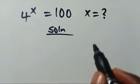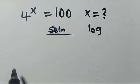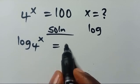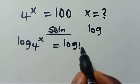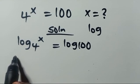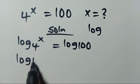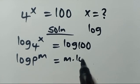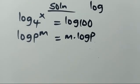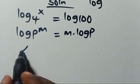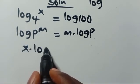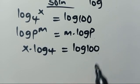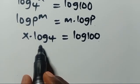From here, let's introduce log to both sides. So we will have log of 4 to the power of x equals log 100. Recall that when you have log p to the power of m, the power m comes down to be m multiplied by log p.